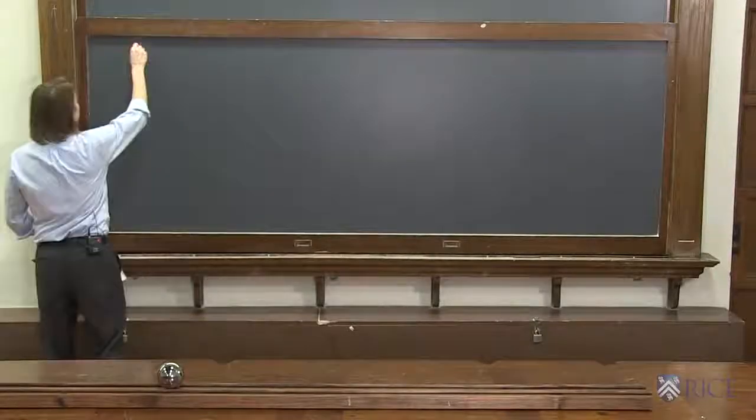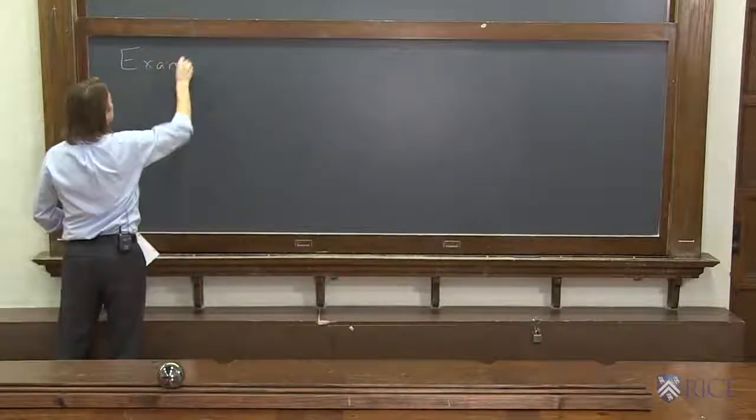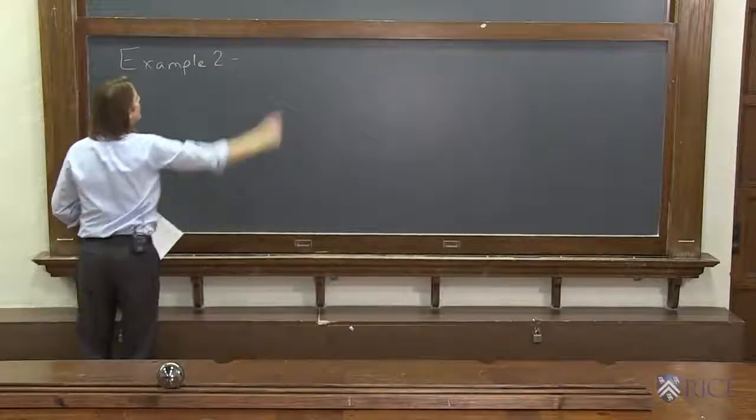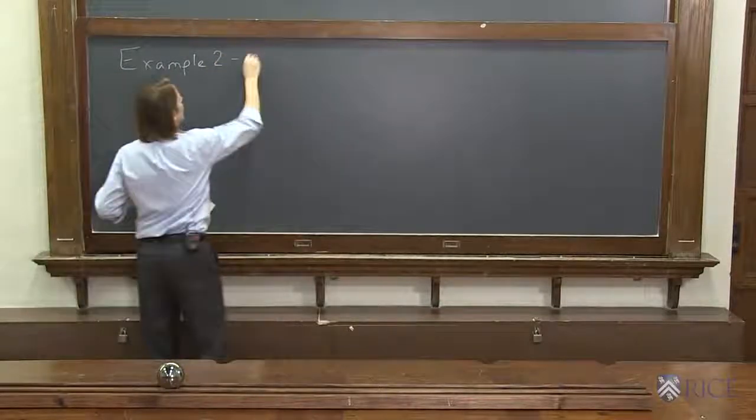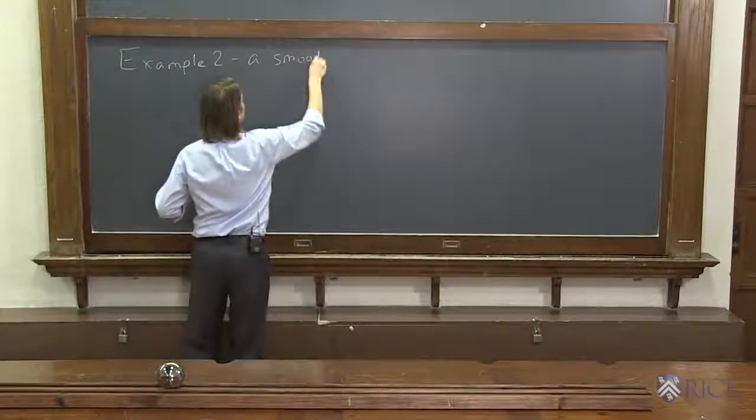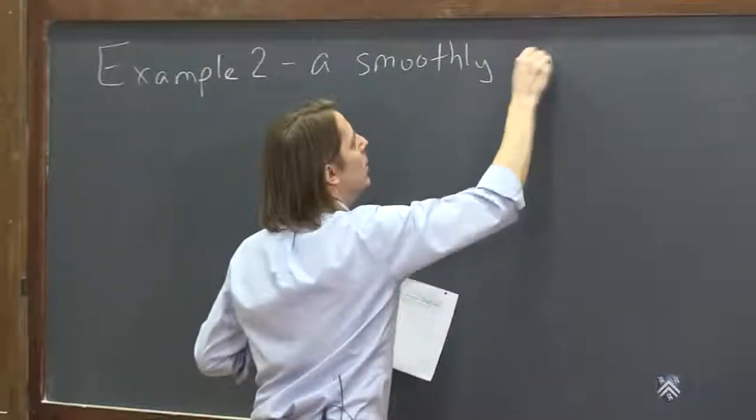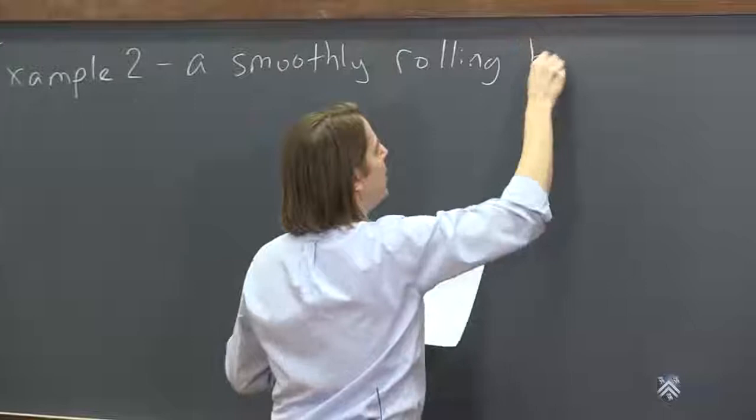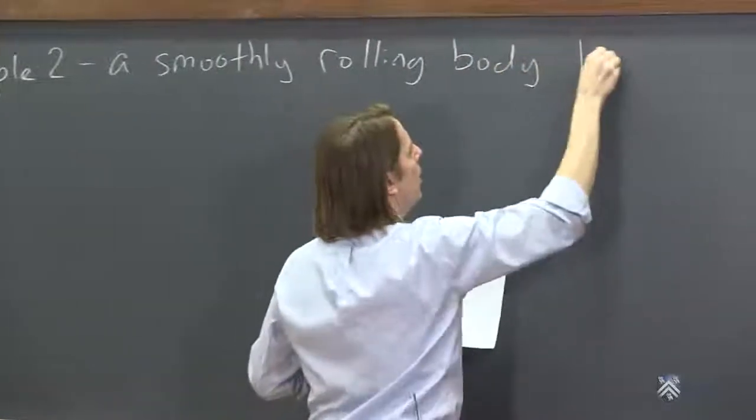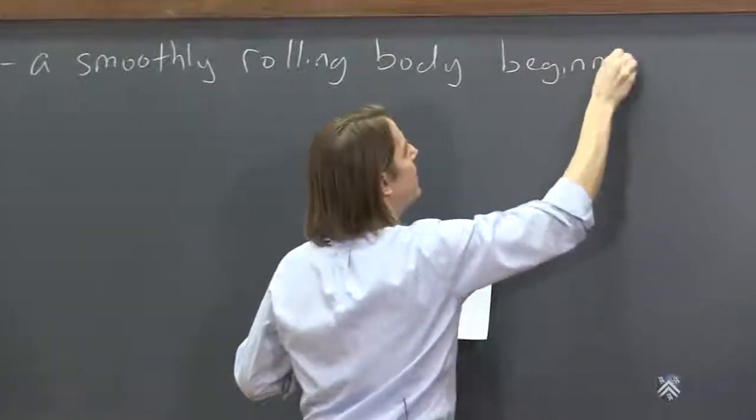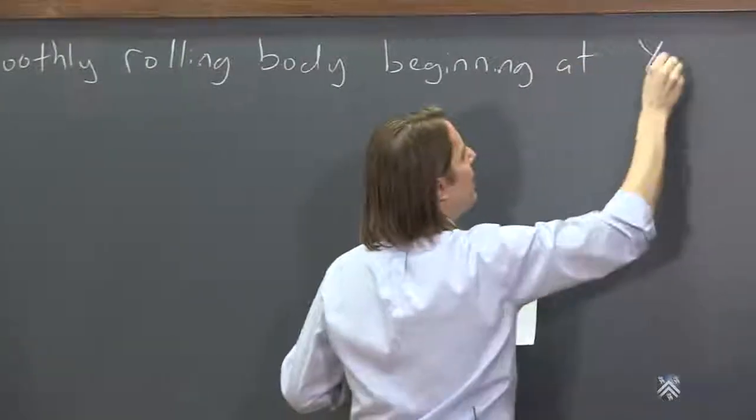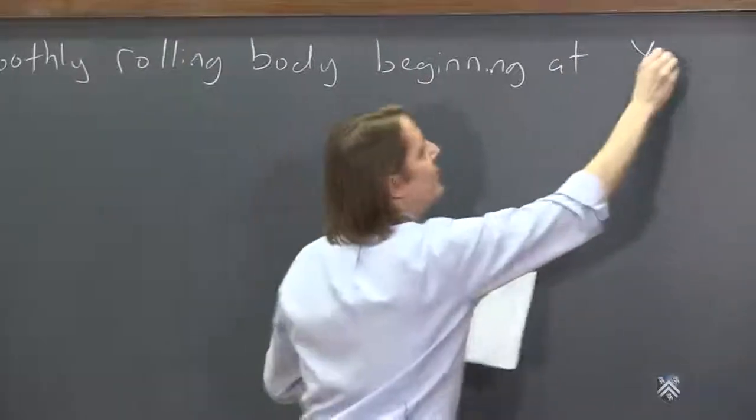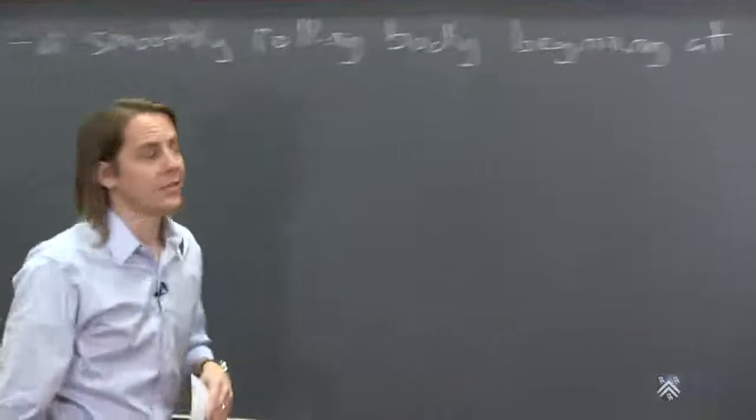All right. Our next example, example two for kinematics is a smoothly rolling body beginning at the position x i. So the subscript means the initial position, x i.